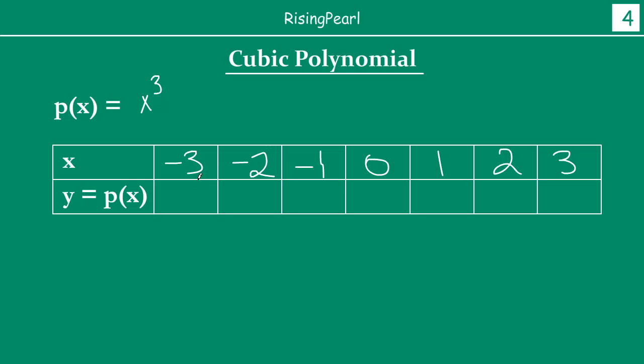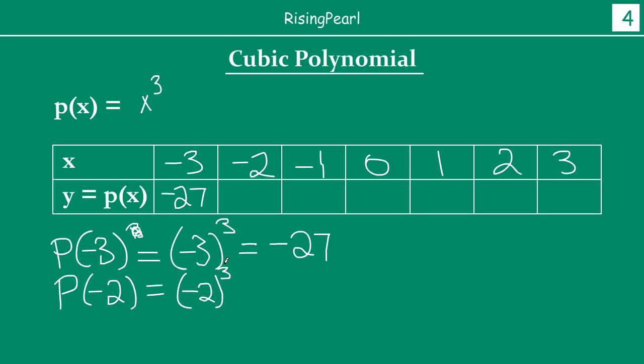So here this will be (-3)³. So this will be minus times minus times minus is negative, -27. So p(-2) similarly will be (-2)³. So this will be minus times minus times minus which is -8. p(-1) will be (-1)³ which will be -1. So it is -27, -8, -1. Now at 0, the value at 0 is 0³ which is 0 so you get a 0.